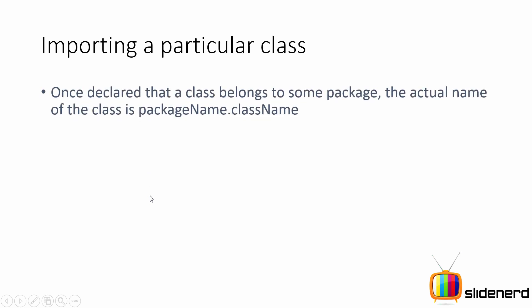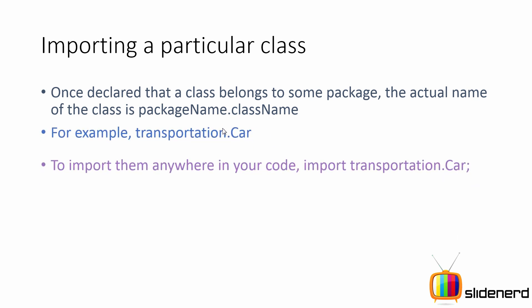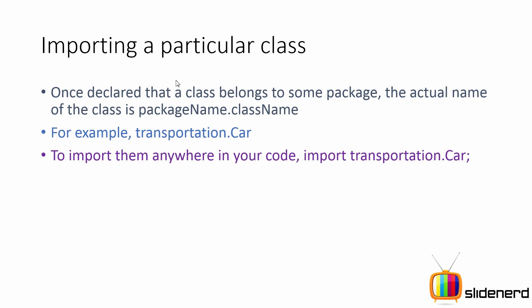So importing a particular class: once you declare that a class belongs to some package, the actual name of the class is treated as 'package name dot class name'. In other words, 'transportation.car' or 'transportation.bus' — that is the fully qualified name of a class in Java. To import them anywhere in your code, you write 'import transportation.car'. This is not necessary if you're working within the same package, but when you move to a different package, that is when this becomes necessary.